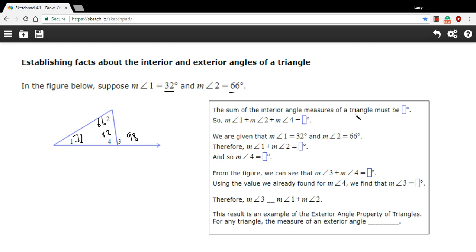Well, let's see what these questions are about. I think we may have covered them basically with what we did here, but let's see if we can fill in the answers. It says the sum of the interior angle measures of a triangle must be, well, that's 180 degrees.